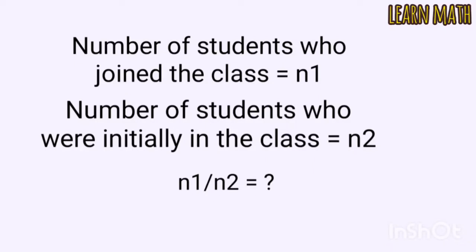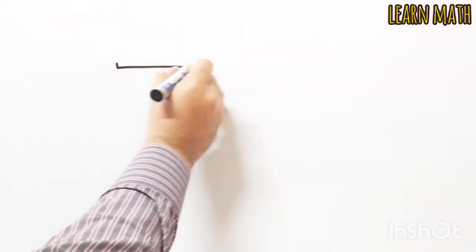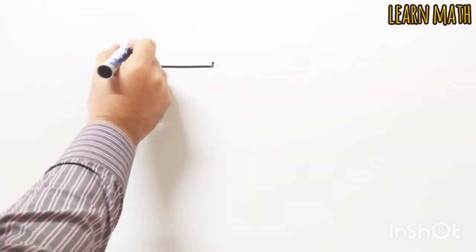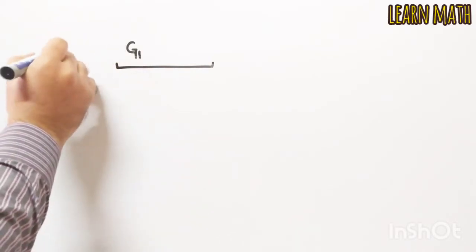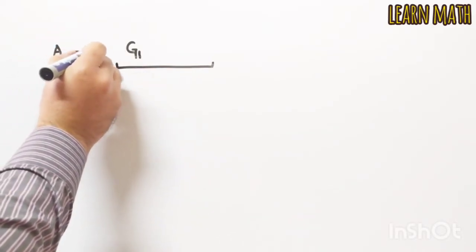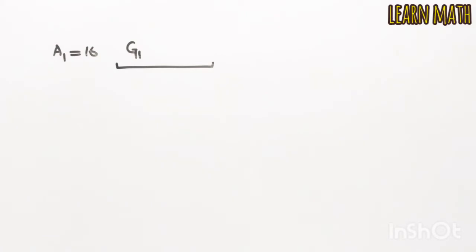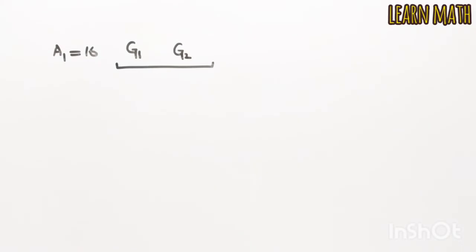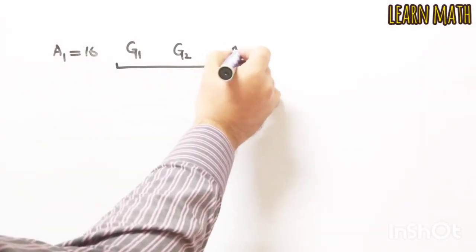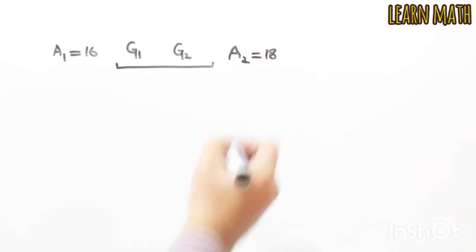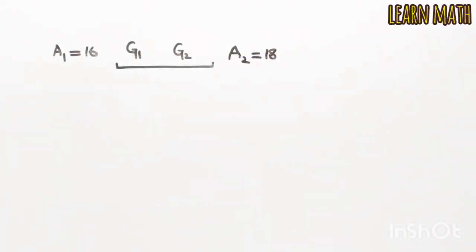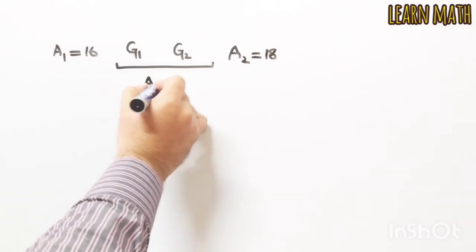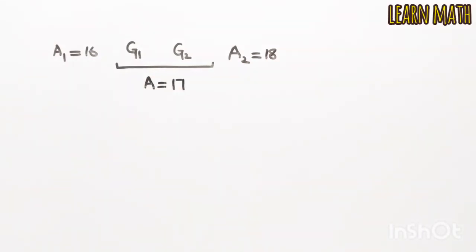We are going to solve it from the very beginning. Let this be a class. The number of students who joined the class is denoted by g1 — their average is given as 16. Those students who were initially in the class are denoted by g2 — their average is given as 18. The average age of the class reduces from 18 to 17, so the combined average A is equal to 17.